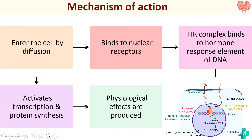In summary as a flowchart: the thyroid hormone enters the cell by diffusion, binds to the nuclear receptor, binds to the hormone response element of DNA, causes activation of transcription and protein synthesis, thereby producing physiological effects. This is the mechanism of action of thyroid hormone. Thank you.